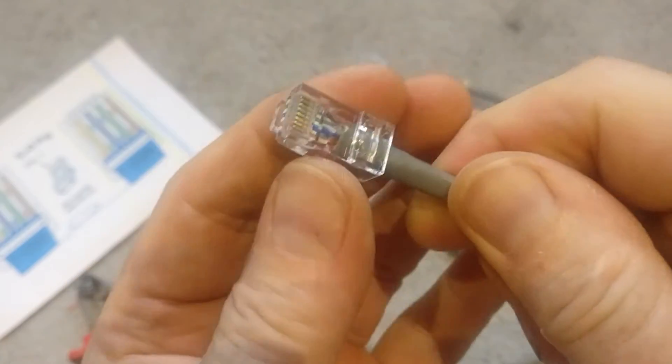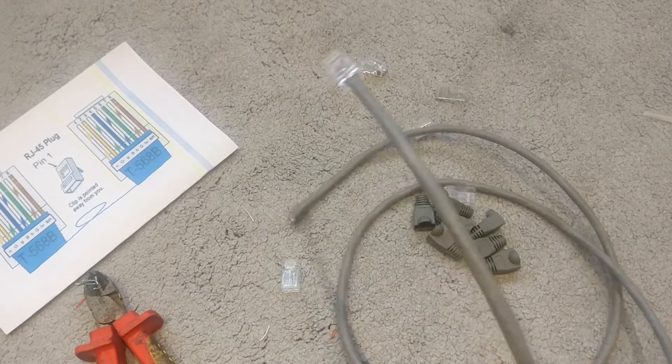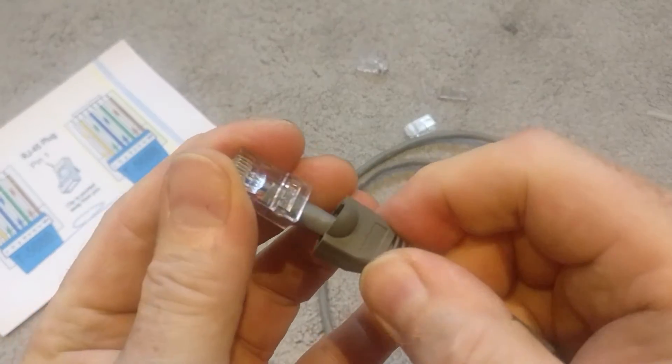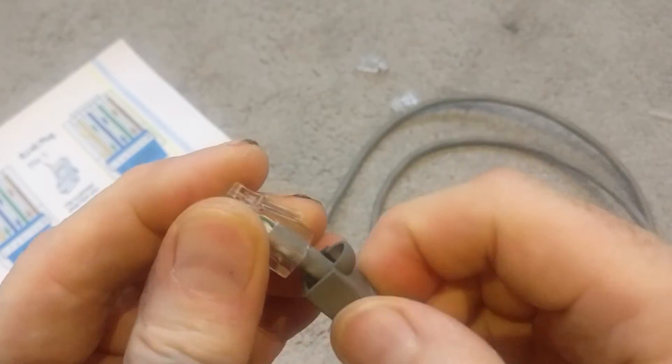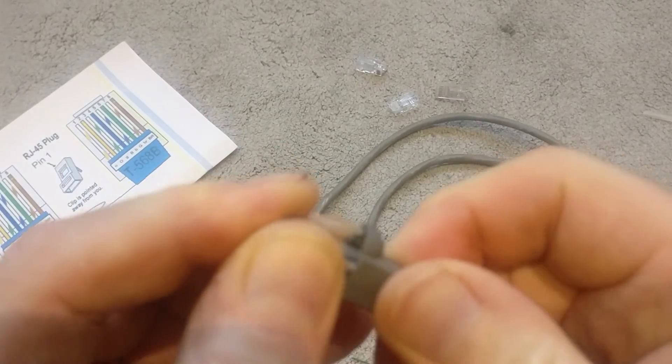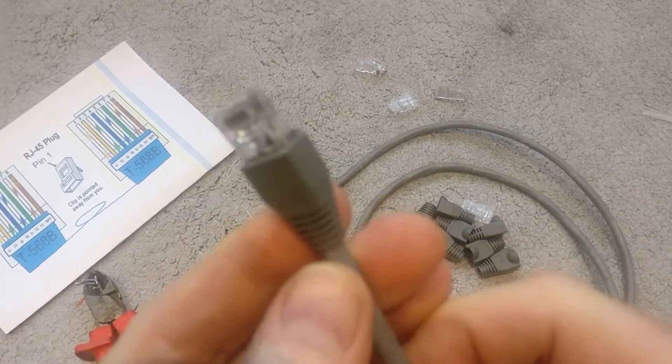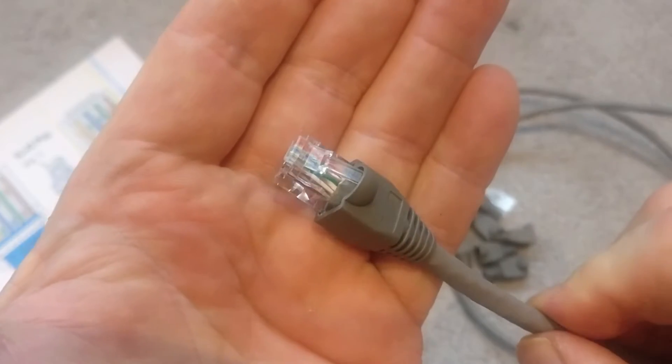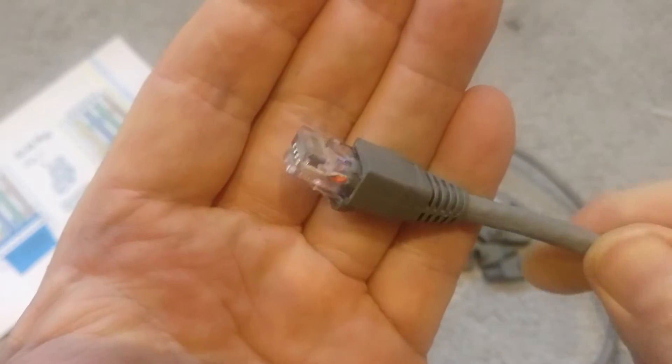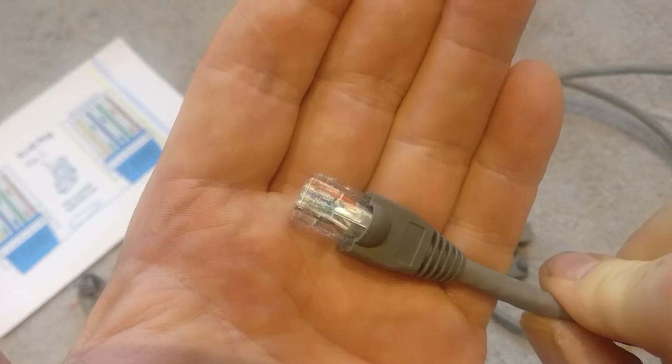And then the last thing to do is just pull that boot that we put on earlier all the way to the top, and then just get that over the back there and with a little connector in. So there you go, nice and simple, very easy to do. You can't really make any mistakes. If you put the cables in the wrong way around, you can just pull them back out, put them in the right order, and push them through.